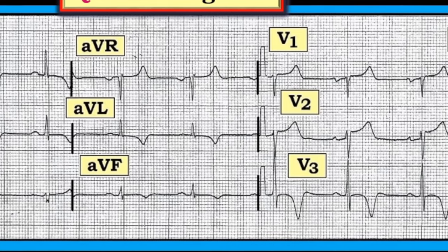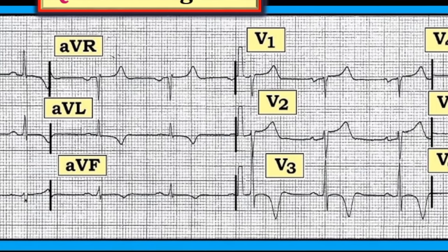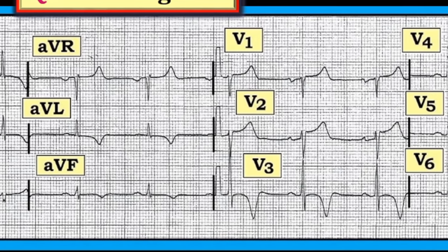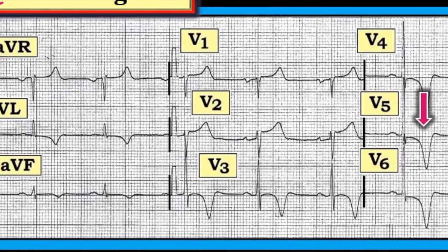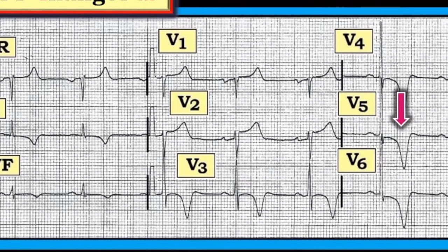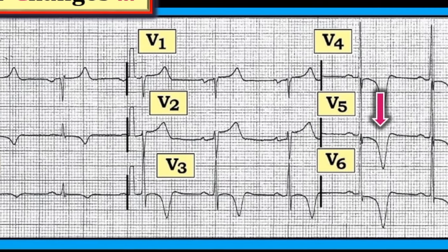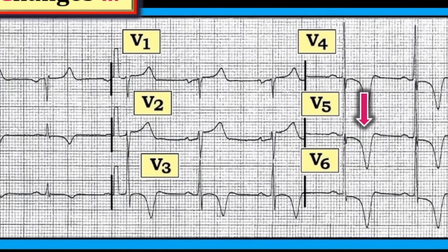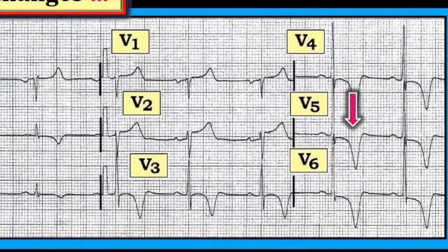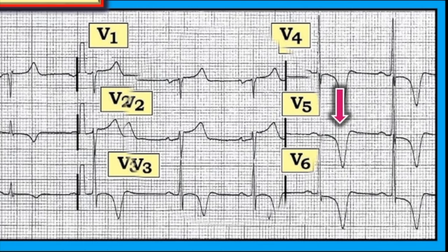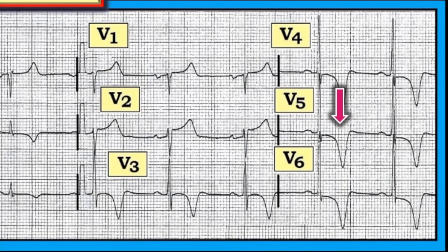There is also 1-2 mm of J-point ST depression in the lateral chest leads prior to the deep T-wave inversion. Finally, there is 1-2 mm of upward sloping, that is smiley-shape, ST elevation in leads V1 and V2.